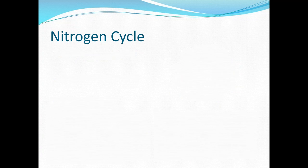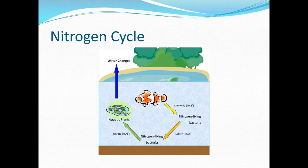We're going to start with the most important component of water quality, which is your nitrogen cycle. Fish produce ammonia from their gills and excreted in waste. This is converted by nitrogen-fixing bacteria in your biological filter into nitrite, and then into nitrate. The nitrate can be taken up by aquatic plants in your pond; however, most of your nitrate is going to be removed by water changes.